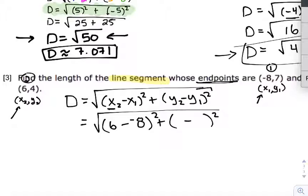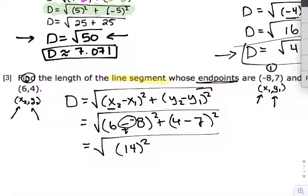Moving on to the second part, we have y2, which in this case is going to be 4, subtracting off our y1 value, which is going to be 7. So continuing our arithmetic, remember that's going to be plus. And so that's 6 plus 8, which is going to give us 14. 4 minus 7, which would be negative 3, before I square it.